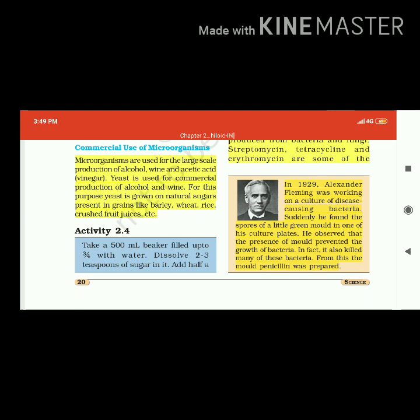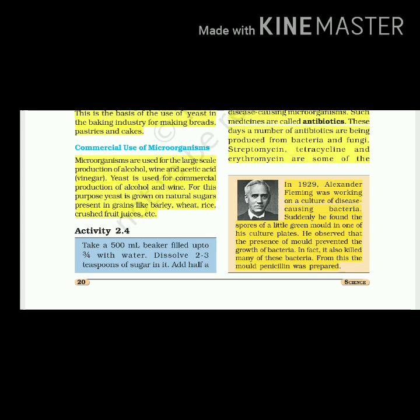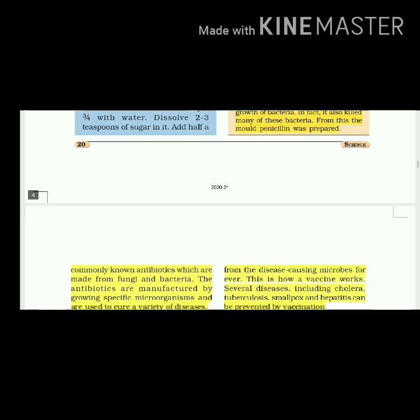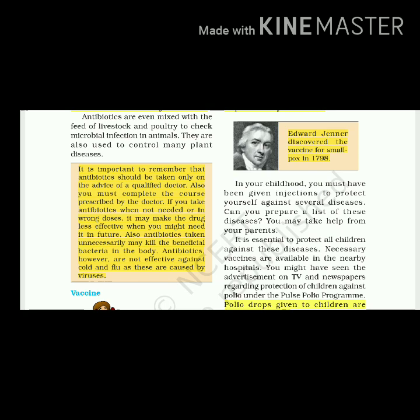In 1929, Alexander Fleming was working on a culture of disease-causing microorganisms. Suddenly, he found the growth of a little green mold in one of his culture plates. He observed that the presence of mold prevented the growth of bacteria. In fact, it also killed many of these bacteria. From this, the antibiotic penicillin was prepared. Antibiotics are even mixed with feed of livestock and poultry to check microbial infection in animals. Antibiotics are also used to control many plant diseases.